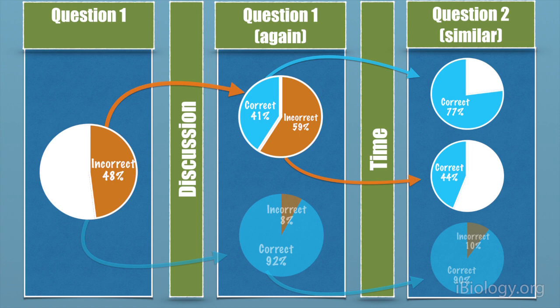The people who stayed with their incorrect answer only got 44% correct, which incidentally is much better than guessing. So maybe they learned something too during the discussion process.